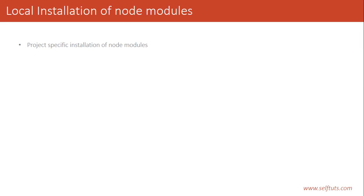Basically in local installation of node modules, project-specific installation is done, which means that node modules are installed according to the project. If a single module is needed by multiple projects — say project A, project B and project C — then that module will be installed inside every project. It is not that all projects will share a single module. So in local installation, project-specific installation of node modules is done.